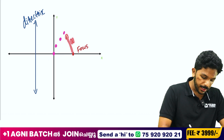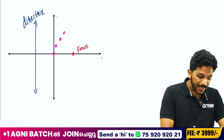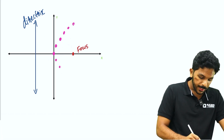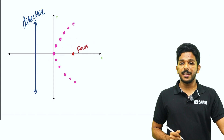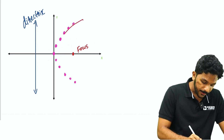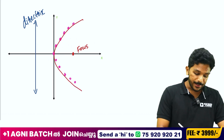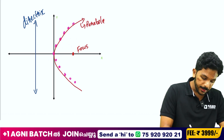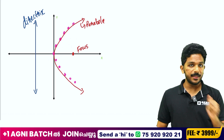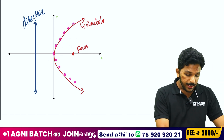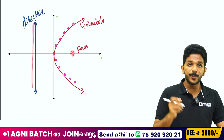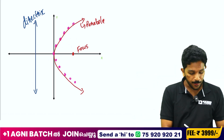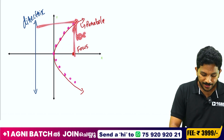The same collection of equidistant points forms a parabolic shape. If I join all these points, this shape is called a Parabola. The focus and the directrix are equidistant from every point on the parabola — this is the definition.